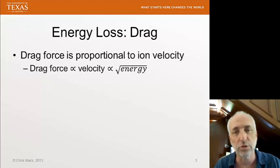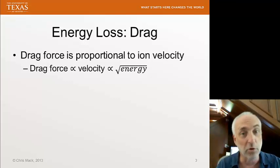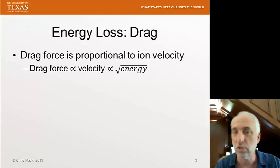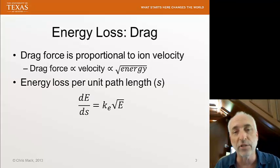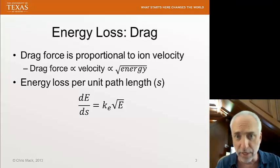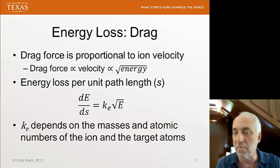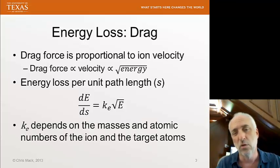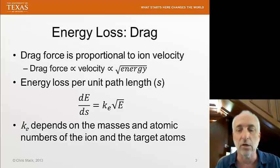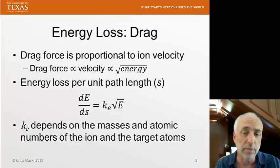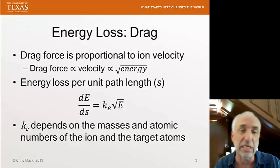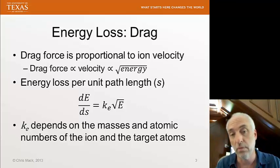The drag force is proportional to the ion velocity — true for ions going through a solid and for parachuters jumping out of an airplane. The velocity is proportional to the square root of the energy, since kinetic energy is one-half mv squared. So the energy loss per unit length as we travel through the crystal is proportional to the square root of the ion energy E. The proportionality constant Ke depends on the masses and atomic numbers of both the ion and the target atom, and different dopant species will give different energy loss coefficients.